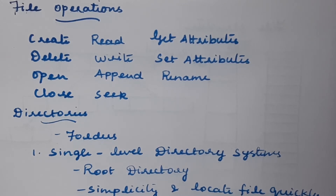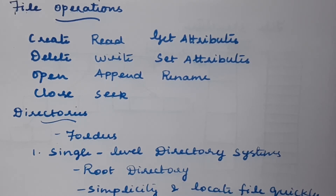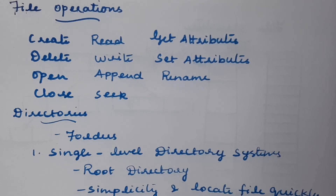For all these operations we have a corresponding set of system calls. For creation of files we use the system call 'create'. When the file operation is done and you want to remove the file from the system, you use the 'delete' system call. Before using a file you need to open it using the 'open' system call, and after operations are complete it is good practice to close all files using 'close', which removes the internal table structures.